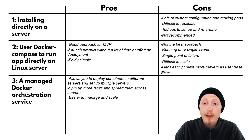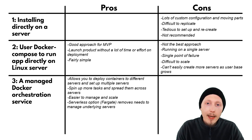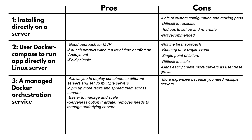AWS ECS also has a serverless option called Fargate, which is very handy because it means you don't have to manage any of the underlying servers — those are all managed by AWS themselves. The drawback is it can be more expensive, since you often need at least a management server plus a server to run the Docker containers, and sometimes there's a charge for the management service itself. It's also quite complex to set up, though it does allow you to create a more scalable long-term solution.